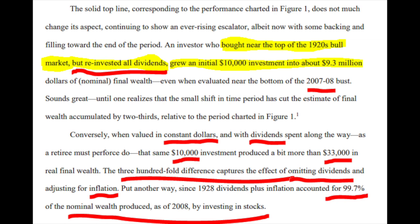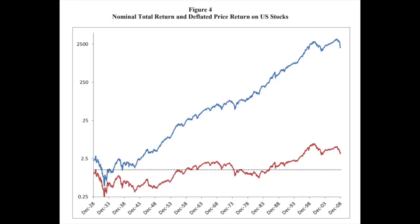To put this into a chart: the blue line is the nominal return on stocks — $10,000 to $9 million — and the red line is the real return on stocks without reinvesting dividends. So inflation and dividends are a huge chunk — 99.7% — of your nominal stock market returns, and therefore we have to really focus on it.